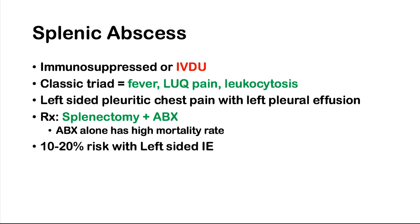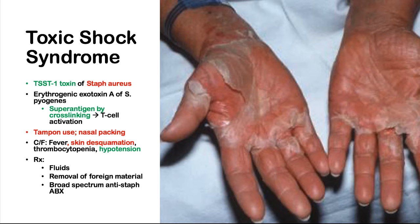Splenic abscess — going back to embolic phenomena — occurs in immunosuppressed patients or IV drug users, sometimes following infective endocarditis. Presentation: high fever, left upper quadrant pain, and leukocytosis. It can also cause left-sided pleural chest pain and left pleural effusion. Treatment requires splenectomy — antibiotics alone are insufficient, and if the spleen ruptures it becomes a surgical emergency. Risk is 10–20% with left-sided infective endocarditis.